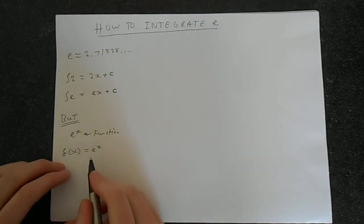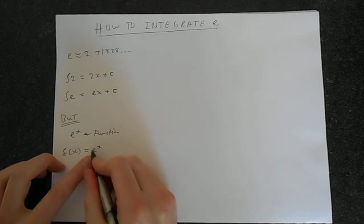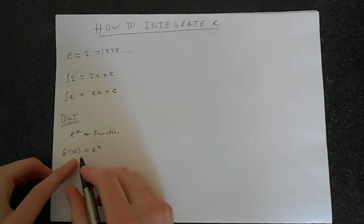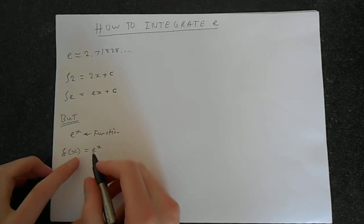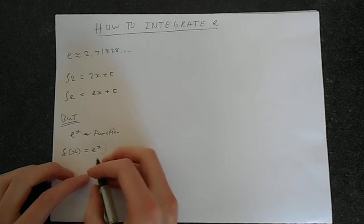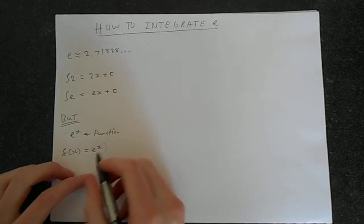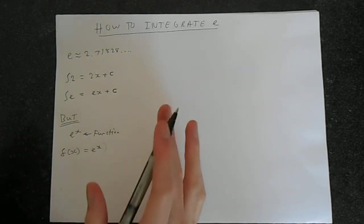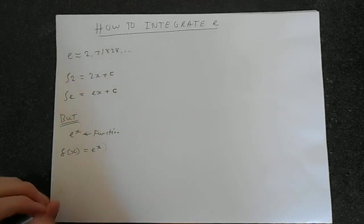This means that the value of e^x depends on what the value of x is. So e^x is no longer just a number because x could be 1, 2, 3, 4, and we would get all sorts of different answers. So this has to be treated differently.